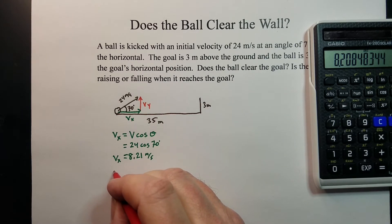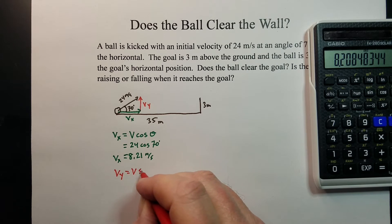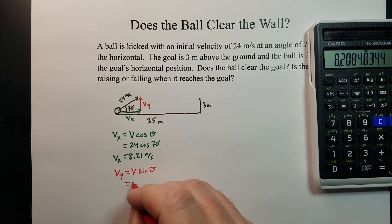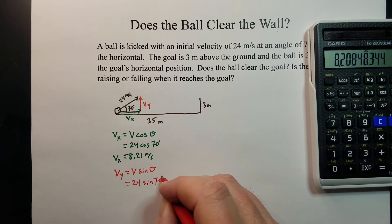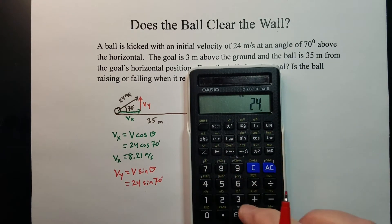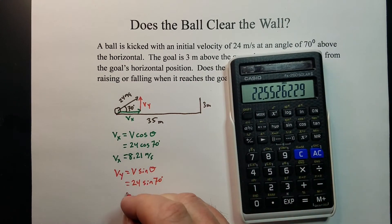For the y direction, we can do the same process, except this time it's v sine theta, because we're looking for the vertical part. So that would be 24 sine of 70 degrees. And that gives me an initial vertical speed of 22.55 meters per second.